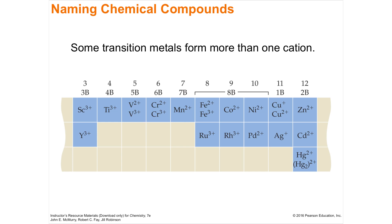In the middle of the periodic table — the B groups (3B through 10B in the U.S. system) — transition metals often have multiple possible charges. For example, copper can be copper(I) or copper(II). Since there are two forms of copper oxide, we need to distinguish them using Roman numerals: copper(I) oxide versus copper(II) oxide.